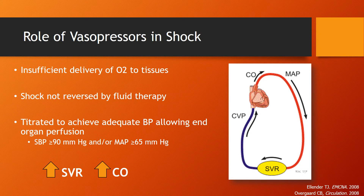Vasopressors are indicated for use in shock due to insufficient delivery of oxygenated blood to tissues. They're used when shock is not reversed by fluid therapy, by increasing the systemic vascular resistance as well as increasing cardiac output. They're titrated to achieve adequate blood pressure, allowing for end organ perfusion. Ideally we aim for a systolic blood pressure of 90 or greater, or a MAP of 65 or greater.